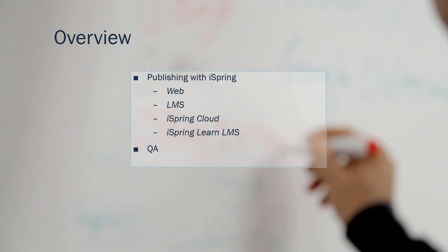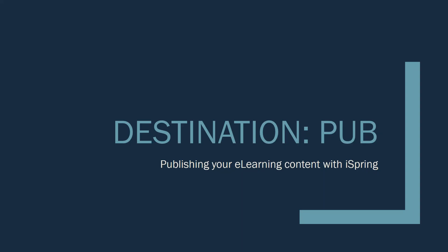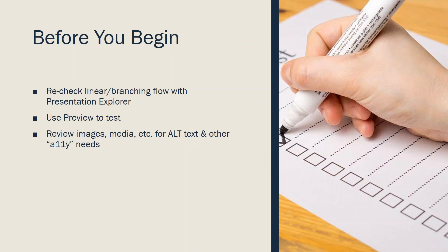Today's overview: we're going to take a look at publishing with iSpring — the different ways you can do it, publishing to the web, to an LMS, to the cloud, to iSpring's cloud, and to the Learn LMS system. Before we do any publishing, as always, make sure that you've rechecked and double-checked everything, retested it on various devices to see how it looks and feels, and added alt text and other accessibility considerations.